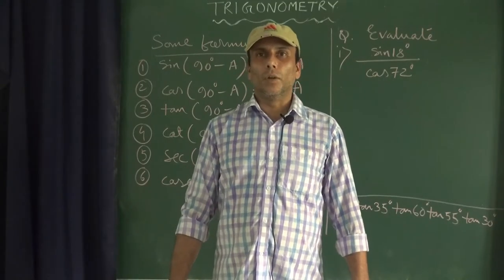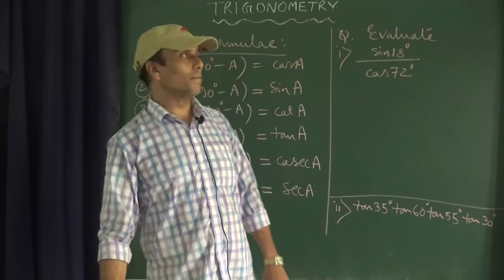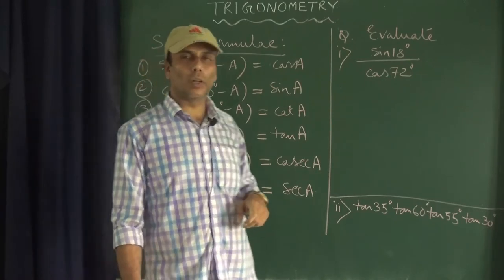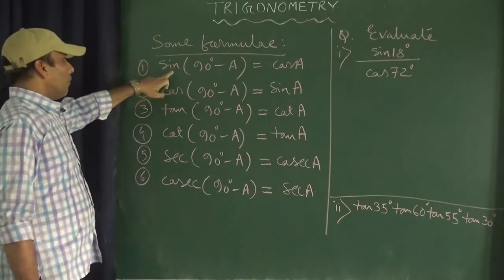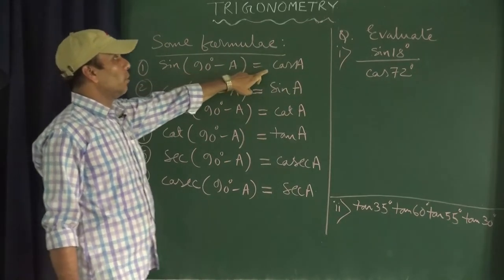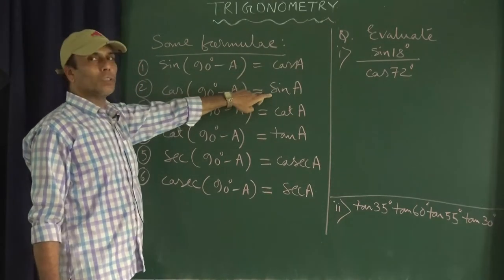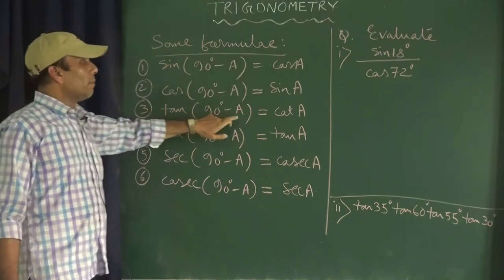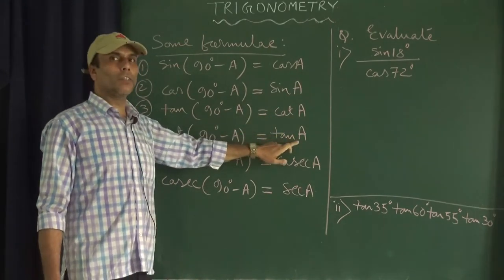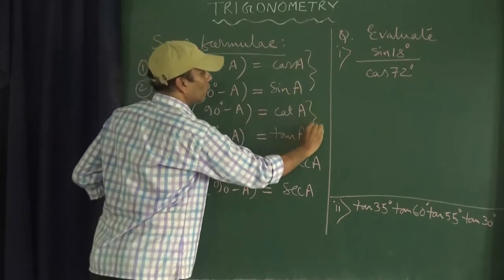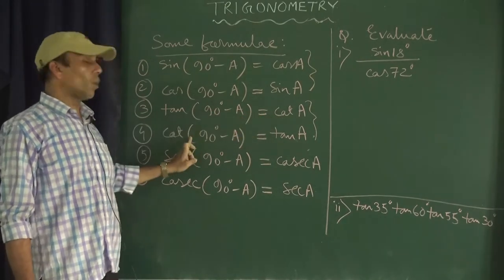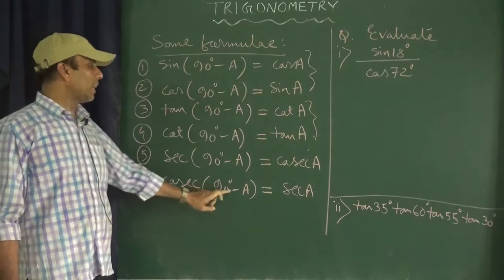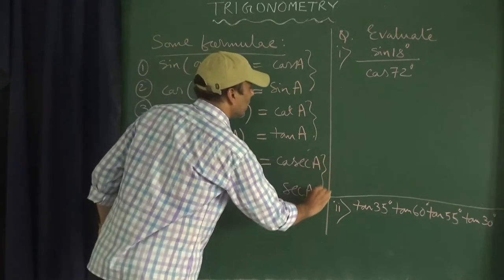Hello viewers, welcome back to our YouTube channel Don Bosco School Tinsukhia. Now we'll discuss some formulas of trigonometry. We know that different trigonometric ratios are sine theta, cos theta, tan theta, cot theta, sec theta, cosec theta. Sine(90° - A) = cosA, cos(90° - A) = sinA — these are opposite of each other. Tan(90° - A) = cotA and cot(90° - A) = tanA — third and fourth are also opposite. Sec(90° - A) = cosecA and cosec(90° - A) = secA — fifth and sixth are also opposite to each other.